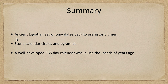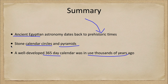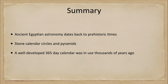So let's go ahead and take a look at our summary. We talked about ancient Egyptian astronomy and how it dates back to very early and even before to prehistoric times. We looked at the stone calendar circles, some of the earliest of these in existence, and of course the great pyramids, and then finally we looked at the well-developed calendar that was in use thousands of years ago. That concludes this lecture on the astronomy of the early Egyptians.